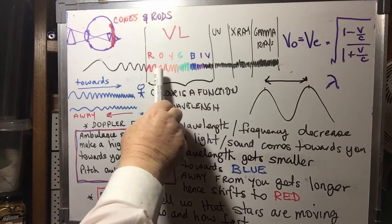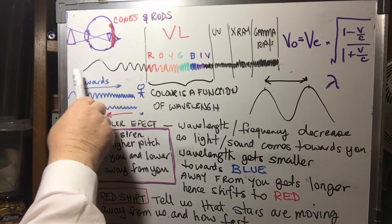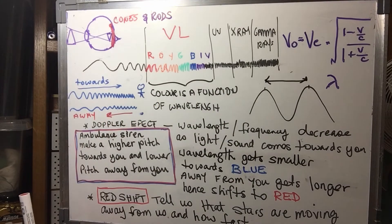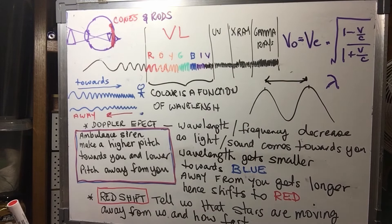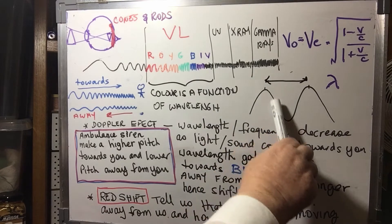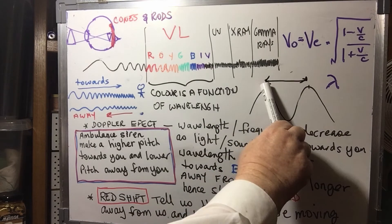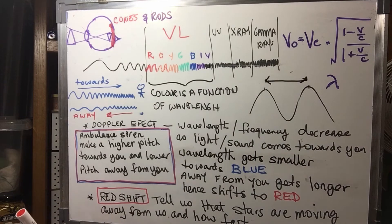These get longer and longer all the way till they're quite long over here. Now what do we mean by a wavelength? A wavelength is from one peak of a wave to the other peak. So here we have from here to here is one wavelength.